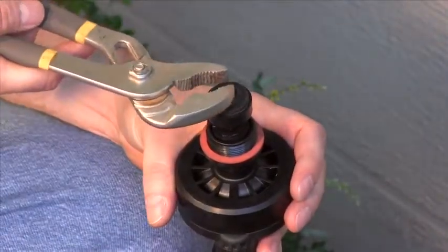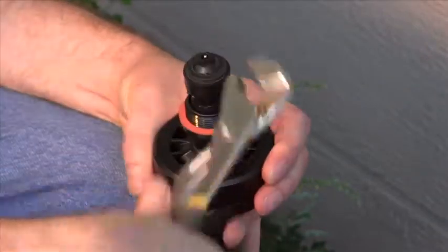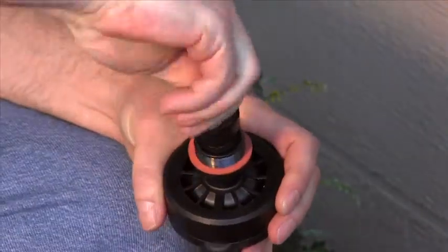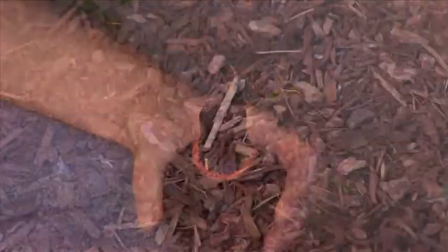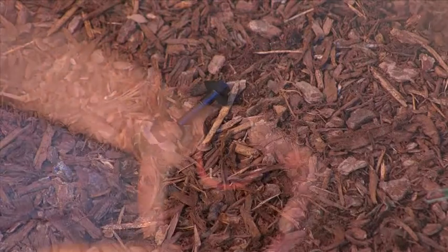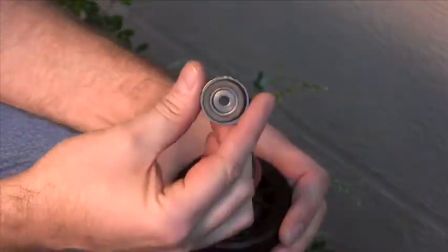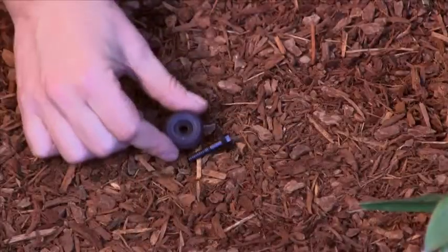To do so, unscrew the seat screw first and set it aside. Next, pull the three-quarter inch seat washer off the actuator post.